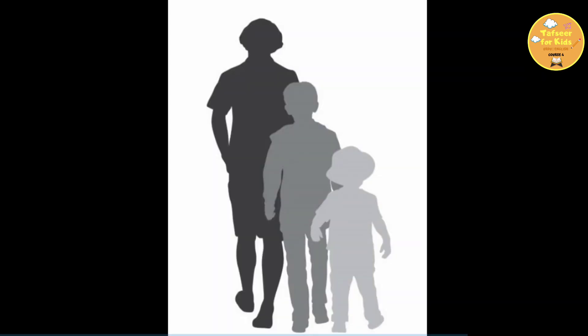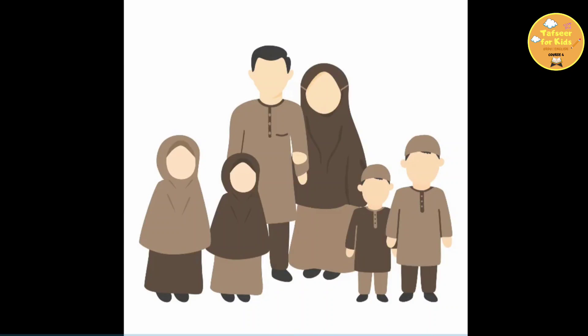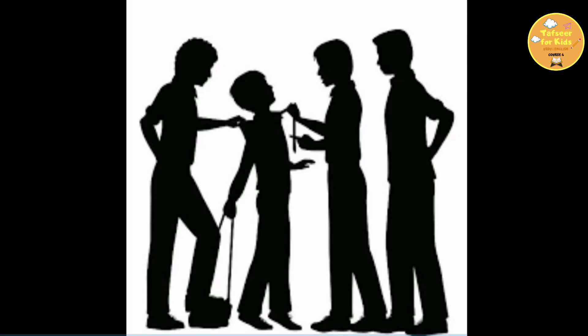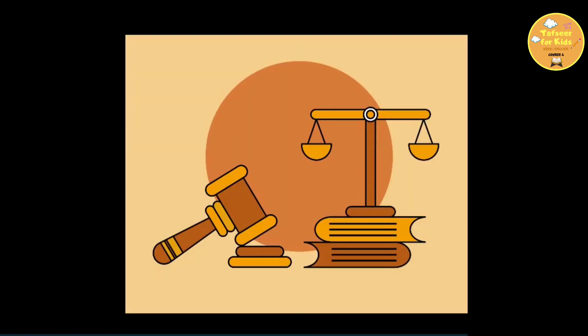Musa alayhi salam grew up to be a very strong and confident young man, but he knew that he was a Bani Israeli. He knew that he belonged to a Muslim family and he was not the son of Pharaoh. So, he used to go out and look at all the workers from Bani Israel and Pharaoh's people beating them up and doing cruel things to them. So, he had a very soft heart towards his own nation. One day, he saw a Bani Israeli person crying out for help because the other man was from Pharaoh's nation. And they were both fighting with each other. Musa alayhi salam being a just person, he went and he tried to stop the fight.